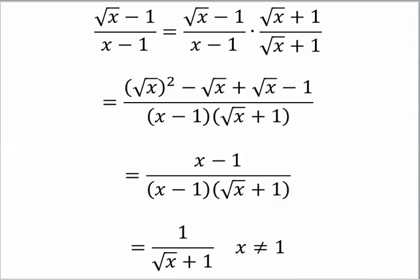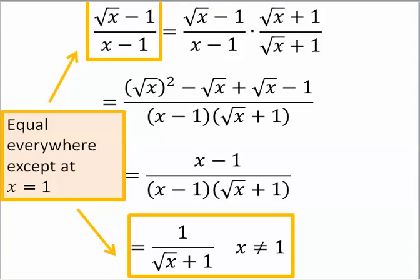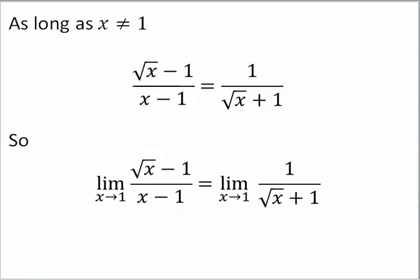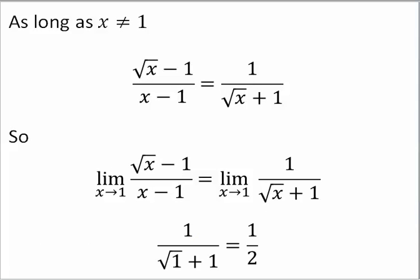We now cancel the factor x minus 1 that appears in the numerator and denominator. And this is what we get. These two functions are equal everywhere except at x equals 1. At x equals 1, the first one cannot be evaluated. But at x equals 1, the second one can. So, since they agree everywhere except for at 1, to find the limit of the first, we need only find the limit of the second. To find the limit of the second, we need only evaluate. And we get 1 half.